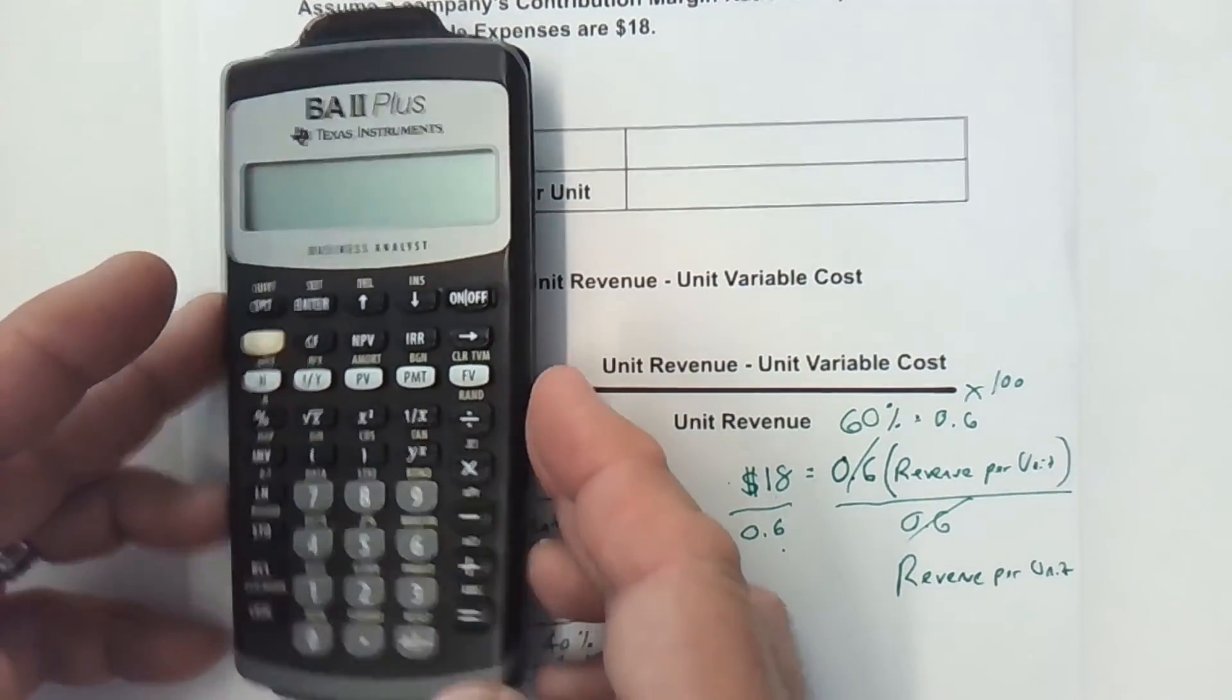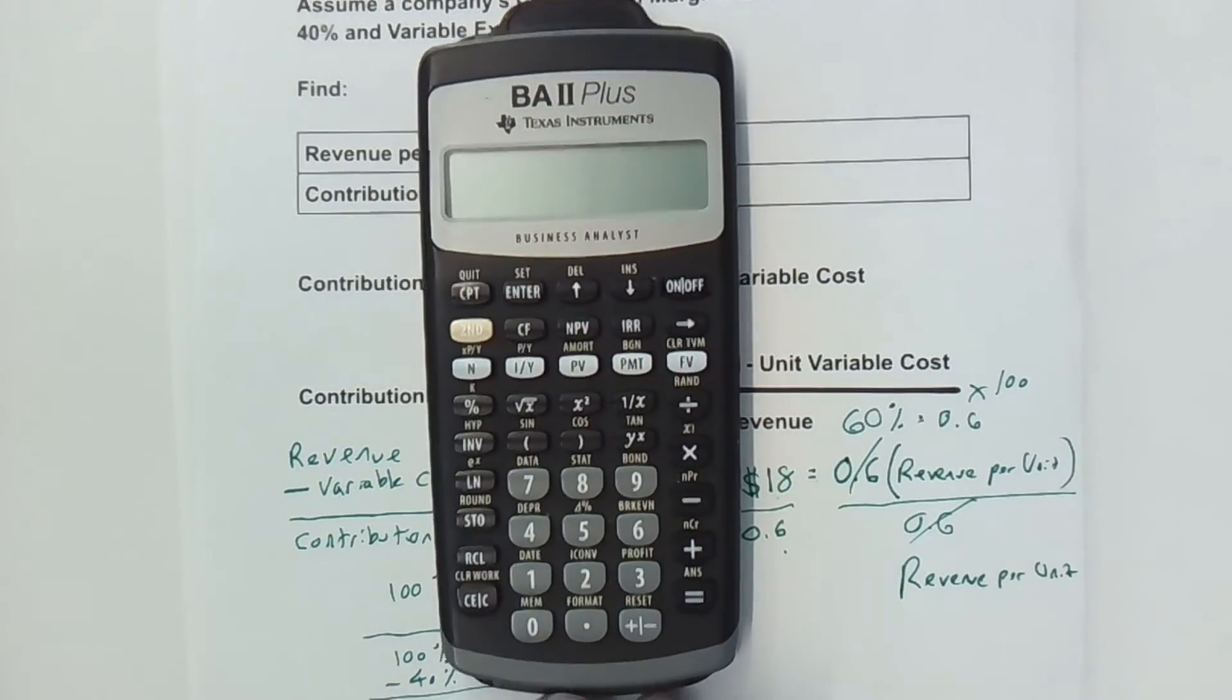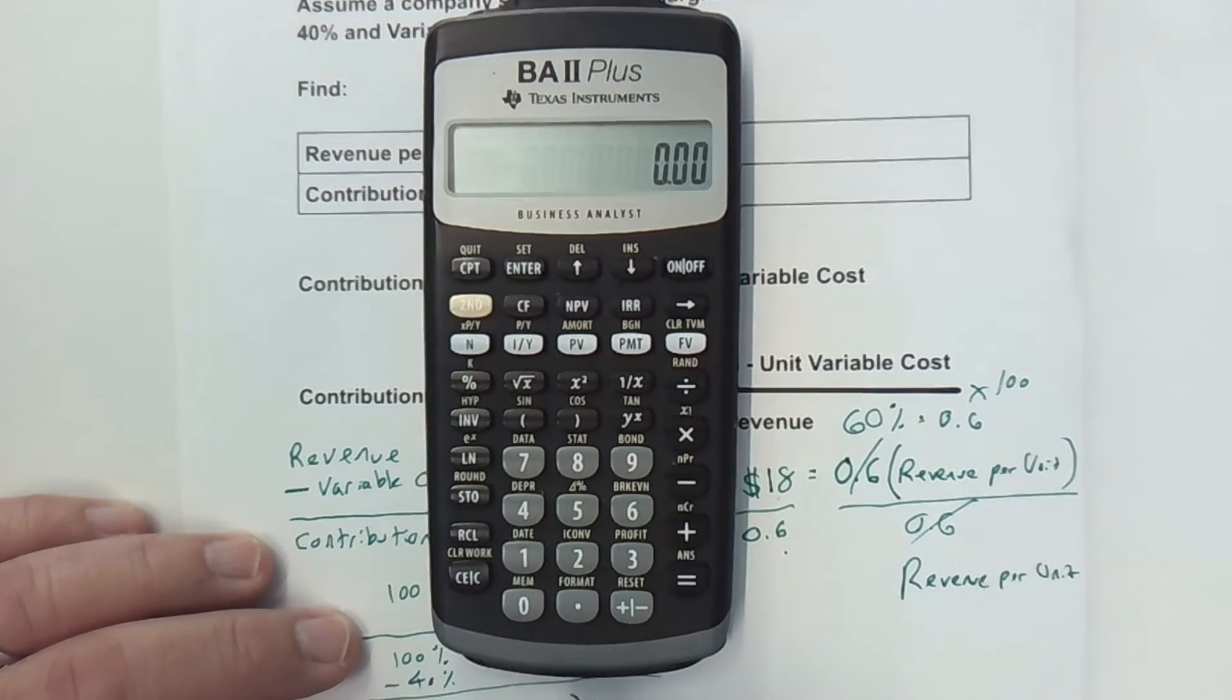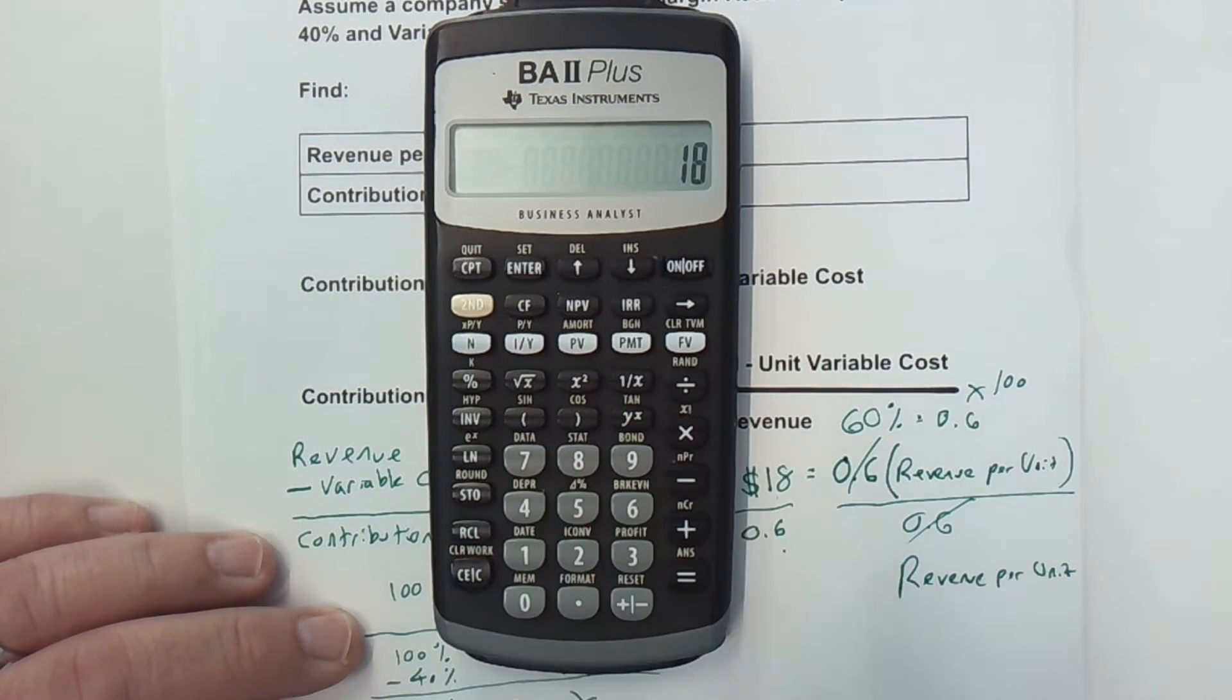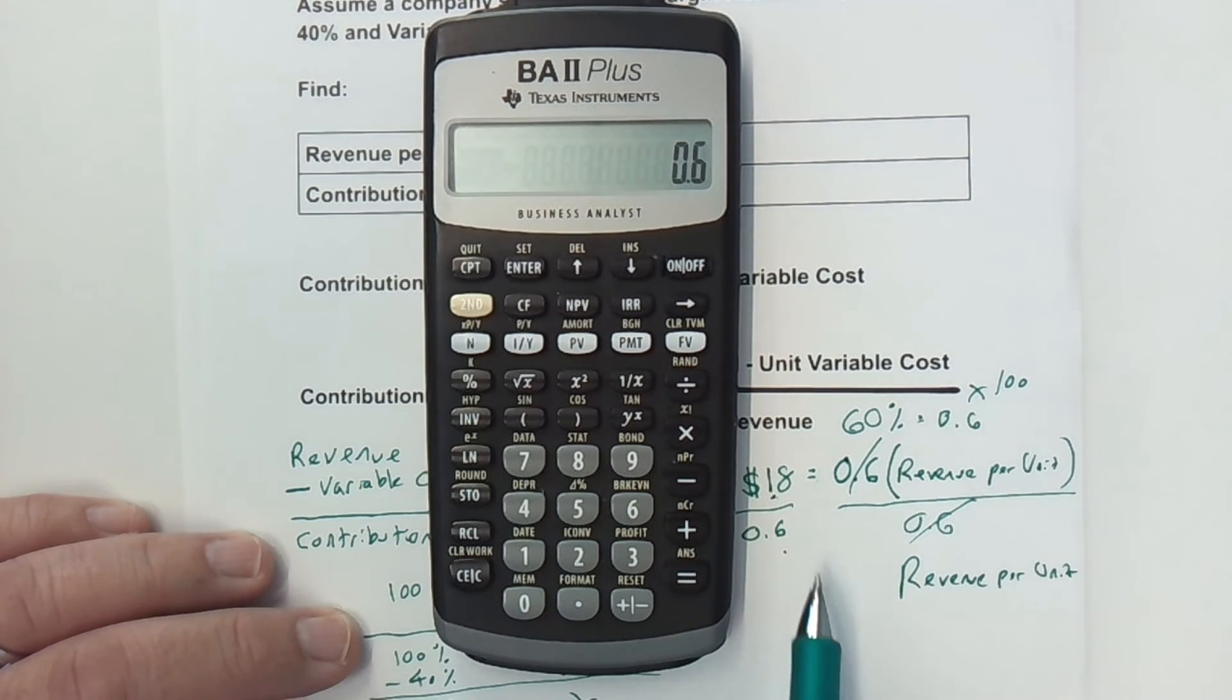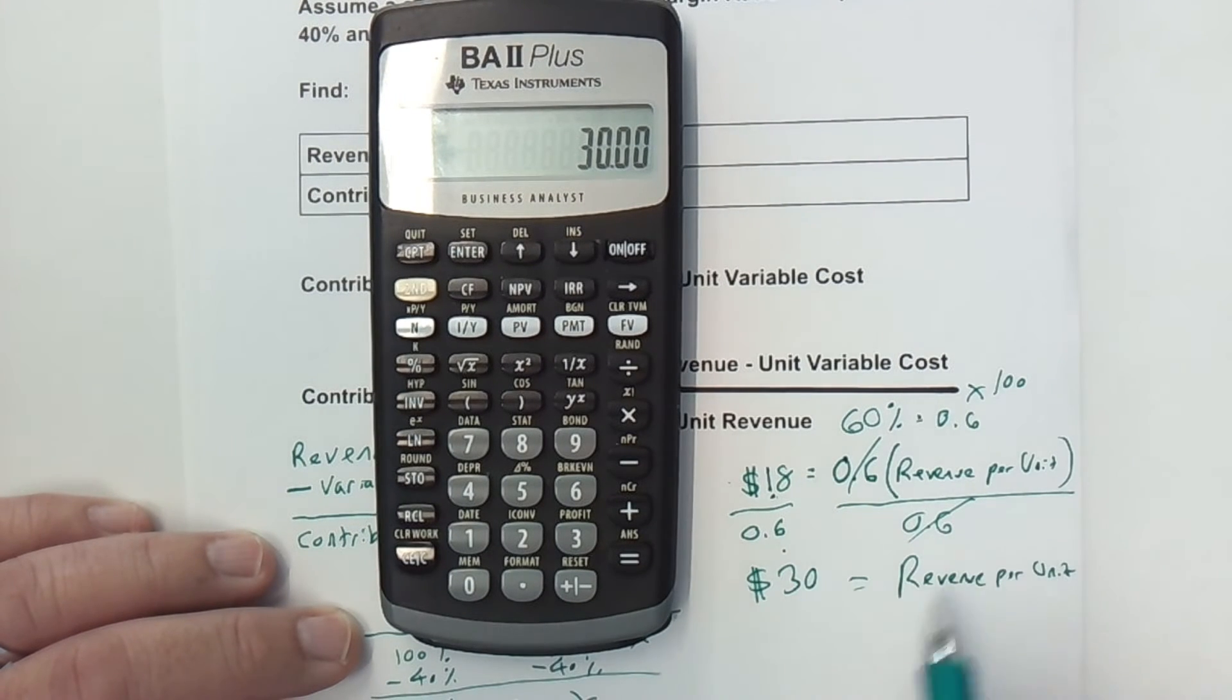To do that, I'm going to pull out my BA2 plus calculator, which is a calculator I like, and you may want to consider getting one for yourself. I'm going to put in my $18, and I'm going to divide by 0.6. I hit the equal sign, and that gives me $30.